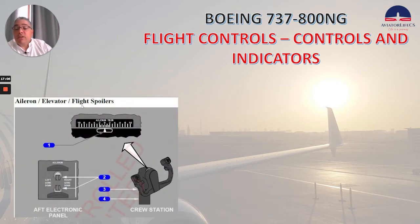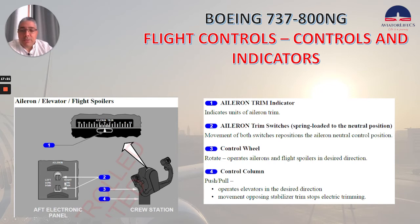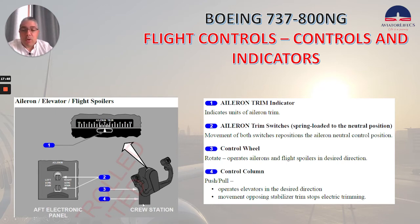The aileron, elevator, and flight spoilers. Number 1 is the aileron trim indicator — indicates units of aileron trim. Number 2, in the aft electronic panel, we have the aileron trim switches — spring-loaded to neutral. Movement of both switches frees the aileron neutral control position. Number 3, we have the control wheel — rotate operates ailerons and flight spoilers in the desired direction. Number 4, we have the control column — push or pull operates elevators in the desired direction. Movement opposing stabilizer trim stops electric trimming.